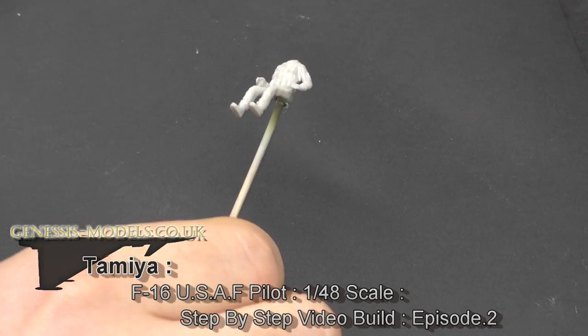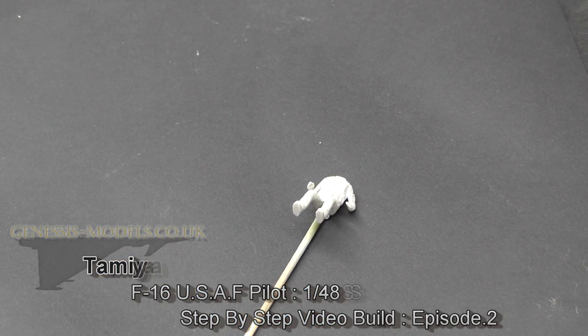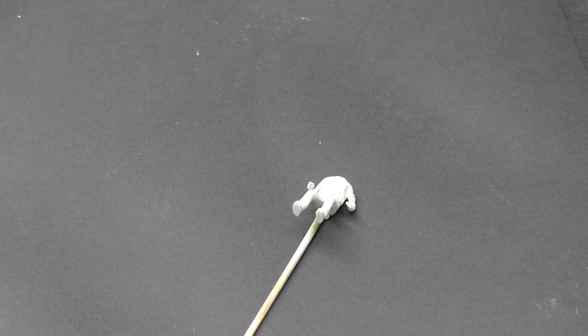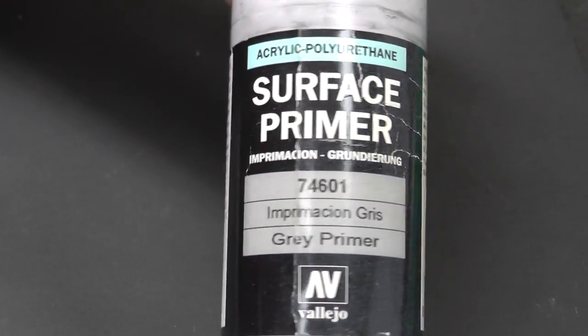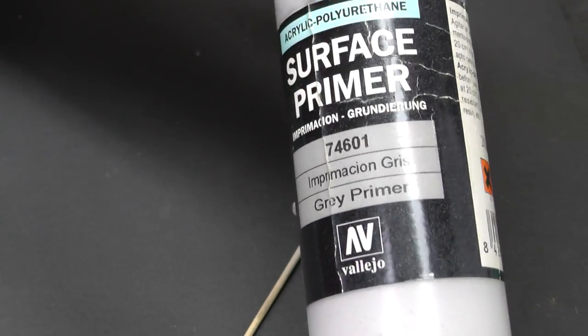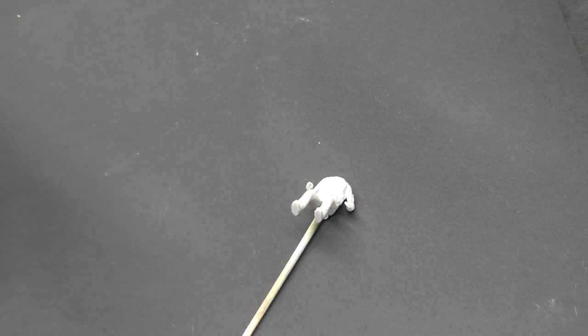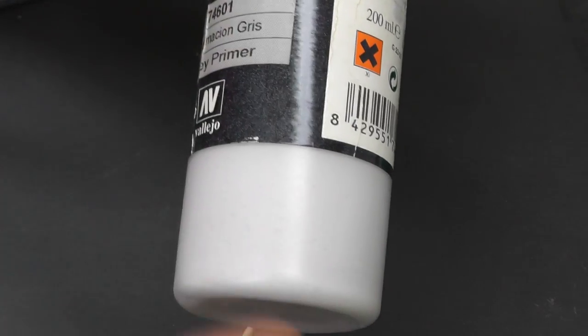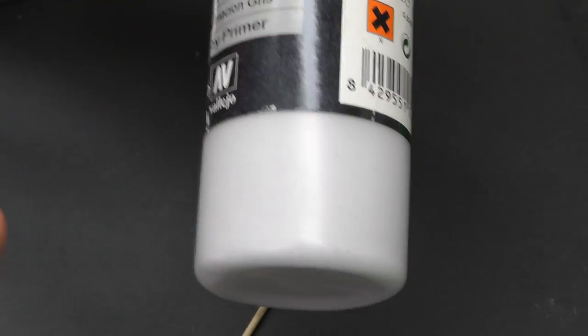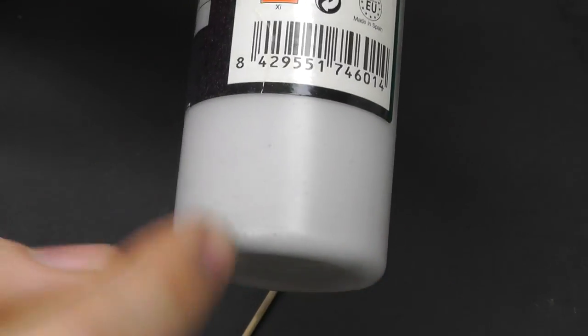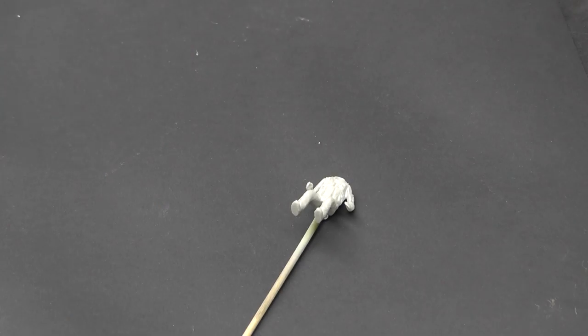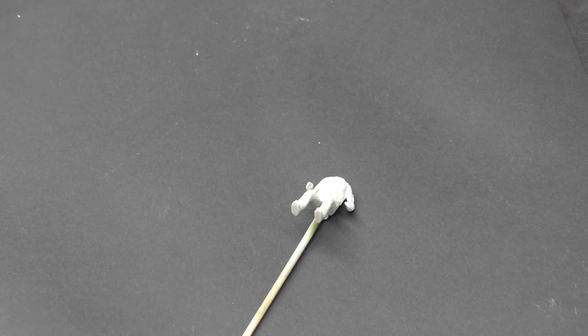What we're going to do now is prime up our miniature. We're going to use Vallejo's surface primer, but I'm going to do a bit of experimenting with this. Give it a good shake because it does separate and you get black bits and thinners and white bits, so you really need to shake it well so it all comes together.